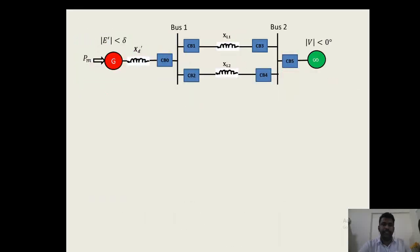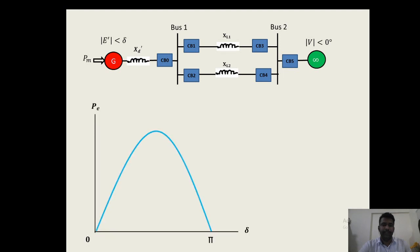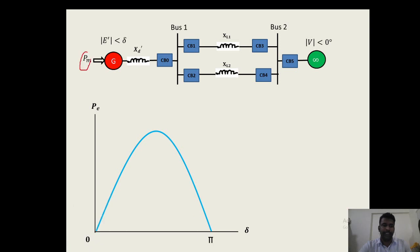We will study the during-fault condition by using the power angle curve. This is the power angle curve before the fault occurs, when mechanical power is constant. Since mechanical power is constant throughout the operation, the initial operating point is identified with the help of mechanical power. Point A is the initial operating point.